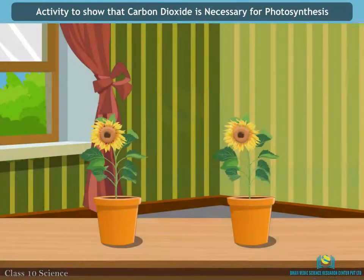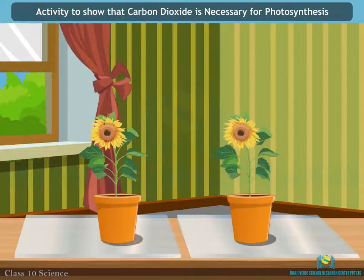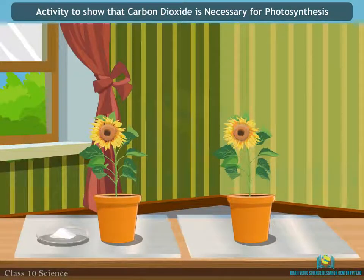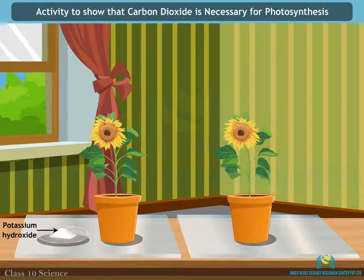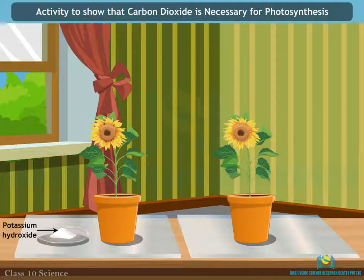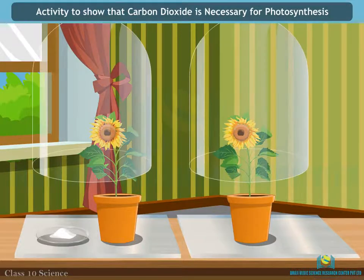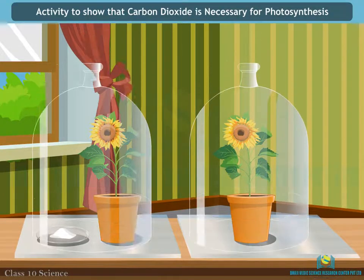Now place each plant on separate glass plates. Place a watch glass containing potassium hydroxide by the side of one of the plants. The potassium hydroxide is used to absorb the carbon dioxide. Cover both of the plants with separate bell jars, as shown.